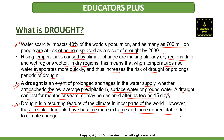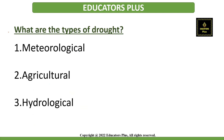There are three types of droughts. People tend to define droughts in three main ways: the first is meteorological drought, the second is agricultural drought, and the third is hydrological drought.